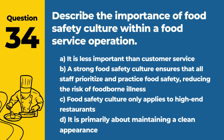Question 55. How should a food service operation manage the risks associated with cooking with cannabis? Answer: B. Understanding legal regulations, dosage, and ensuring clear labeling to inform customers. Proper management includes being aware of legalities, controlling dosages, and communicating with customers about the presence of cannabis in food.